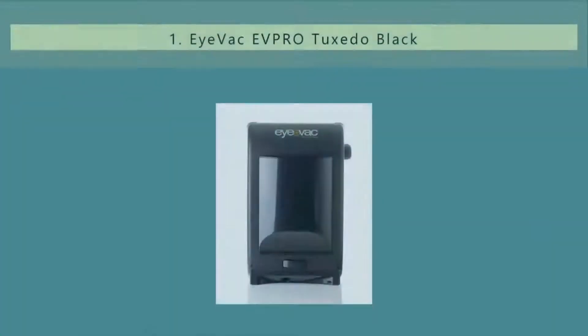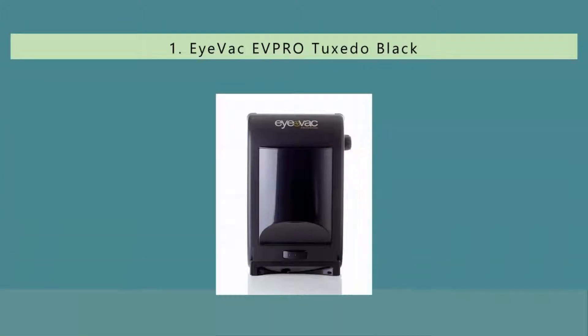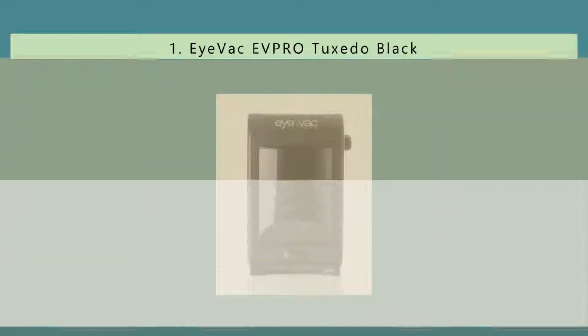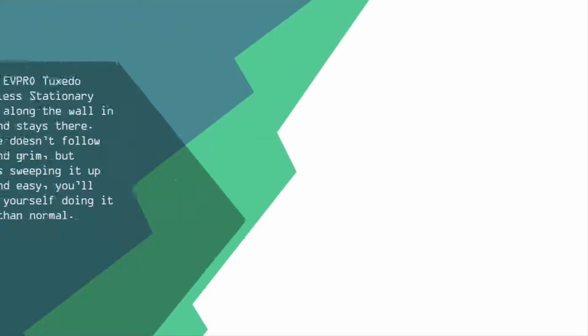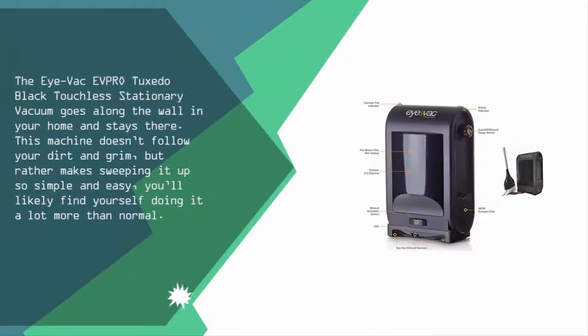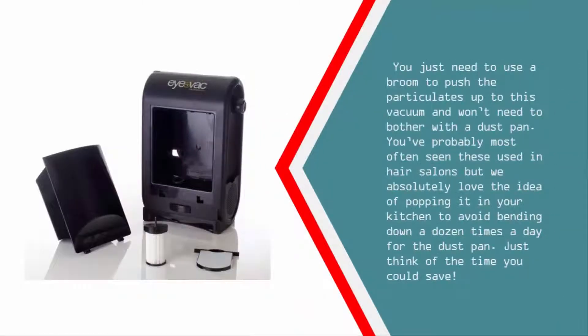And coming in at number one of our list: the IVAC EVRO Tuxedo Black touchless stationary vacuum goes along the wall in your home and stays there. This machine doesn't follow your dirt and grime but rather makes sweeping it up so simple and easy you'll likely find yourself doing it a lot more than normal.